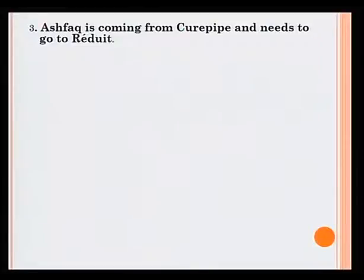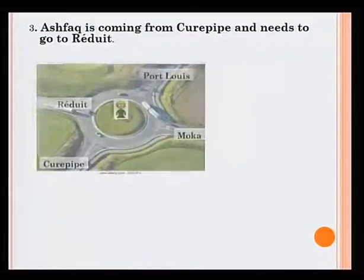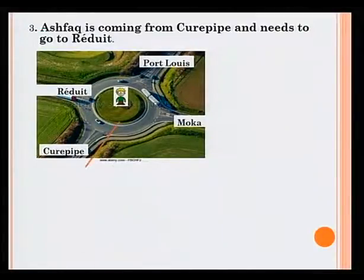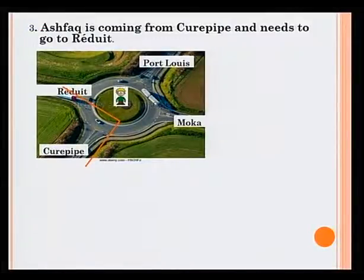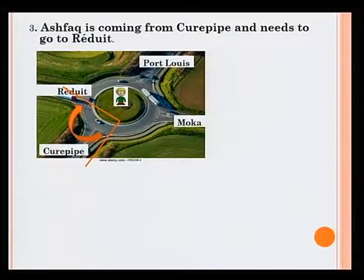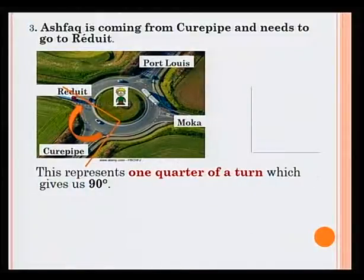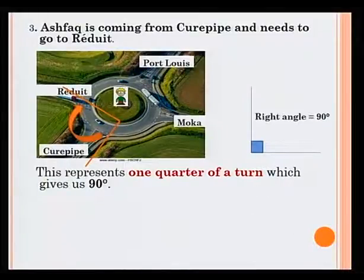Let's have a look at the third case. Ashfak is coming from Q-Pip and needs to go to Rejwi — that is the first exit. This represents one quarter of a turn, which gives us 90 degrees. A quarter of a turn is 90 degrees, also known as the right angle.